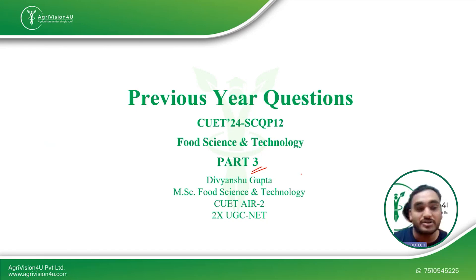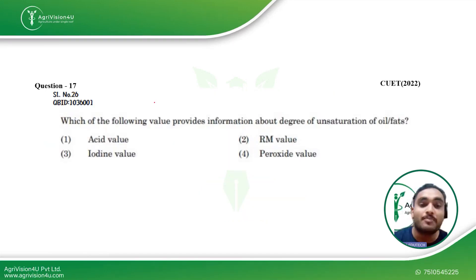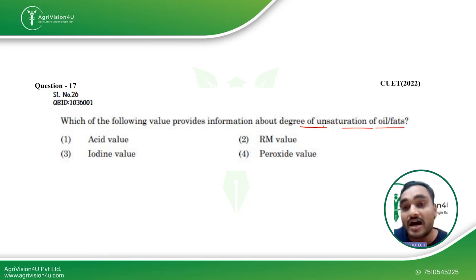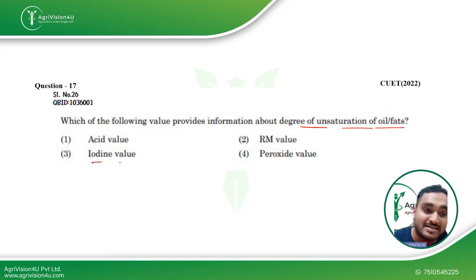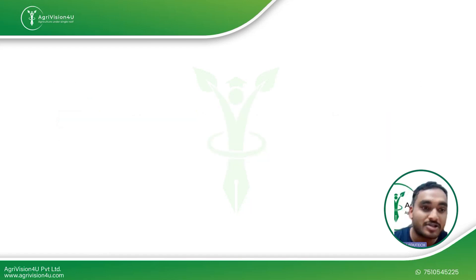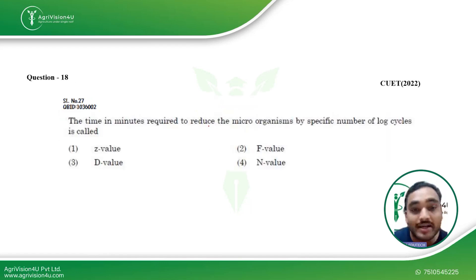Coming straight to the first question: which of the following values provides information about the degree of unsaturation of oil and fat? As covered in class, degree of unsaturation refers to how many double bonds are present in your oils and fats. So iodine value is the direct answer, and many of you have also done the practical for this in the laboratory.